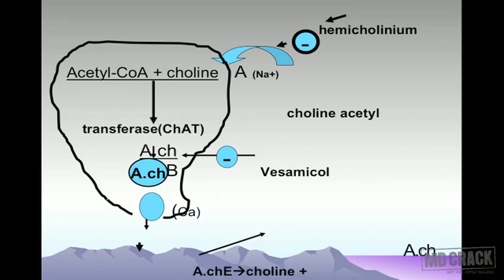Let's look at cholinergic transmission and the synthesis of acetylcholine. Choline enters the nerve terminal with the help of carrier A, under the control of sodium. Choline then combines, and the enzyme choline acetyltransferase acts to form acetylcholine. This acetylcholine enters the granule with the help of carrier B.